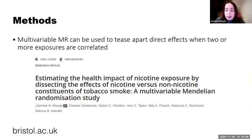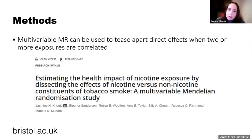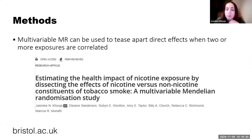Mendelian randomization would be a useful tool to explore the role of nicotine, but there are currently no GWAS of nicotine exposure conducted outside of people who smoke — so it remains confounded by smoking. That's where multivariable MR comes in, as it can tease apart direct effects when two or more exposures are correlated, like nicotine and tobacco exposure. We previously applied this model to physical health outcomes, and a colleague suggested applying it to a psychiatric outcome — depression.